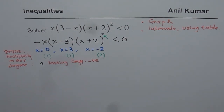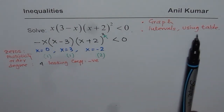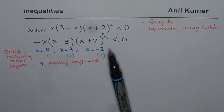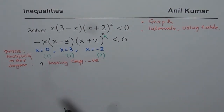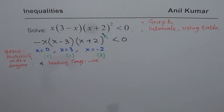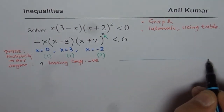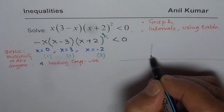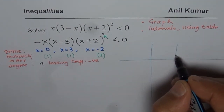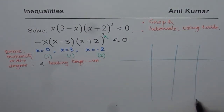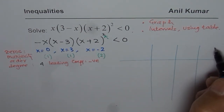We can graph this function to get the solution clearly, and we can also form a table to check the intervals. To graph this we have all the required parameters. Our zeros are at minus 2, 0, and 3, and I am drawing lines which will help us build the table as well.